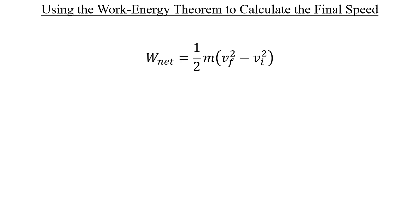The goal is to isolate this final velocity variable, so let's multiply both sides by 2 and divide both sides by the cat's mass. Then we can add the initial velocity squared to both sides and take the square root of both sides as well.